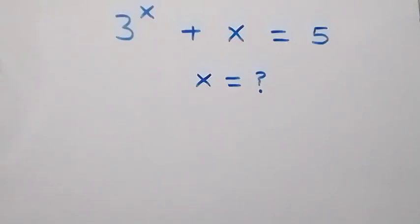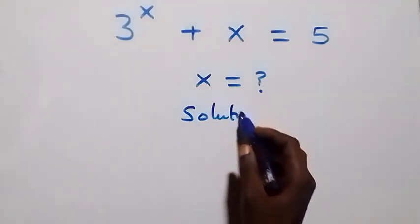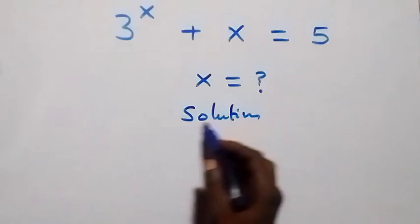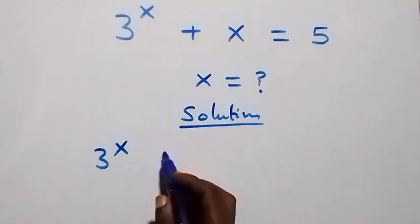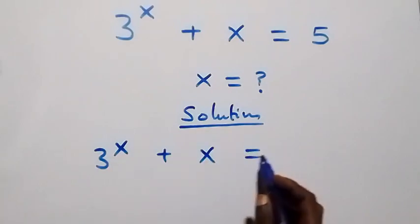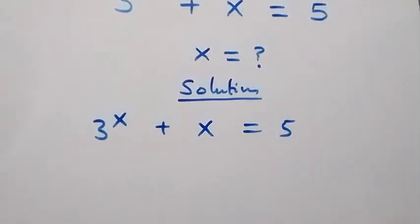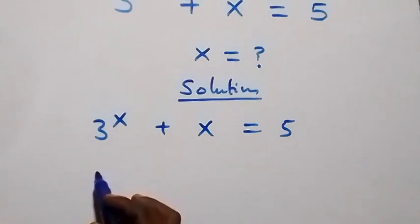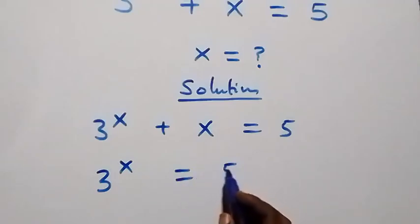Hello, you are welcome. How to solve this nice algebra equation. From what we have here, we are given three raised to power x plus x equals to five. Let's take x to the right hand side and we have three raised to power x equals to five minus x.